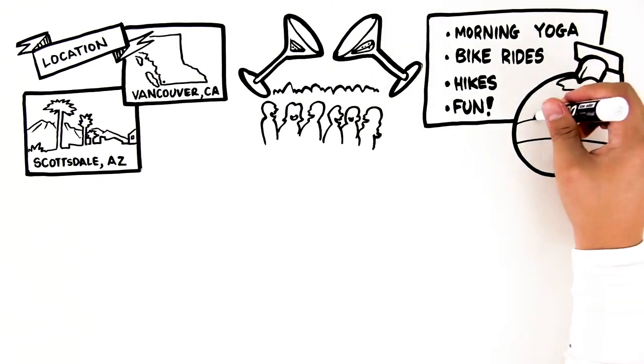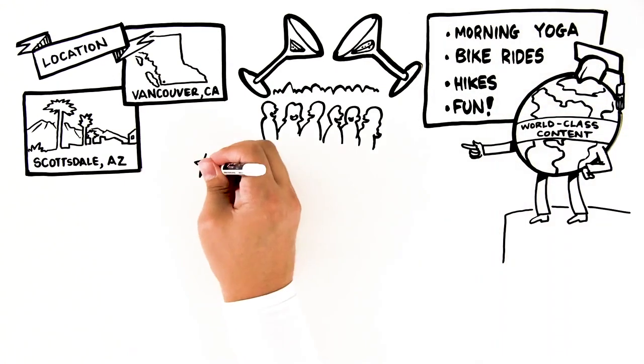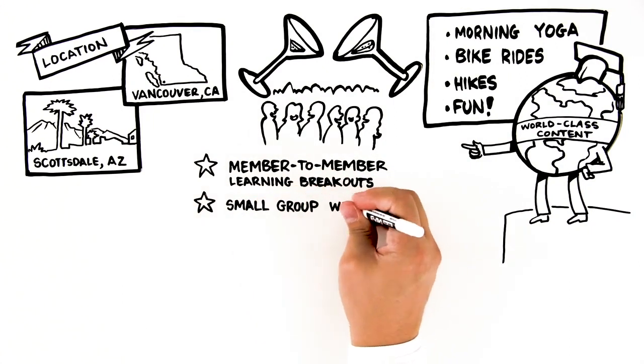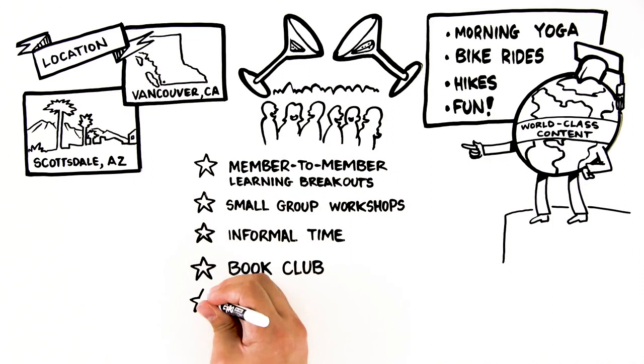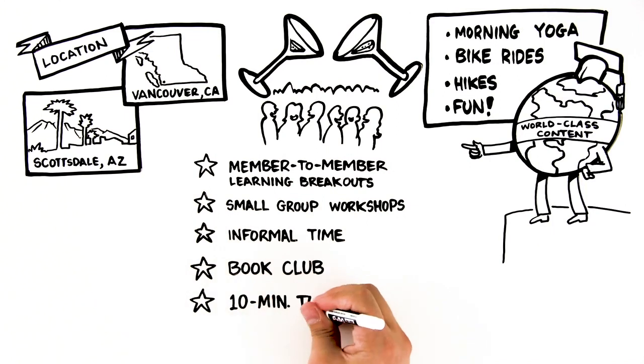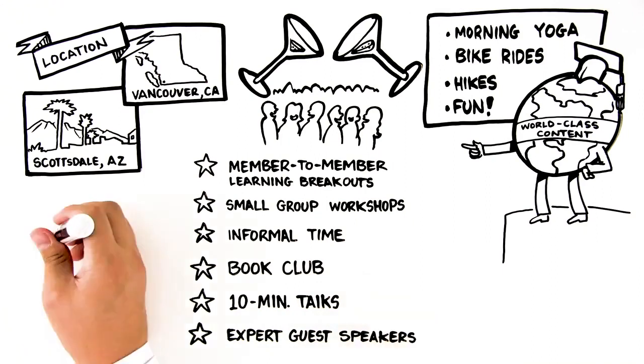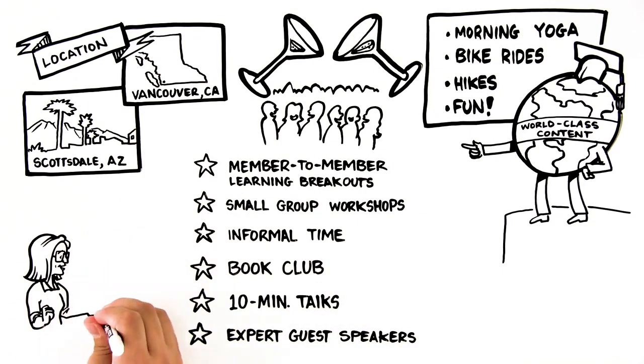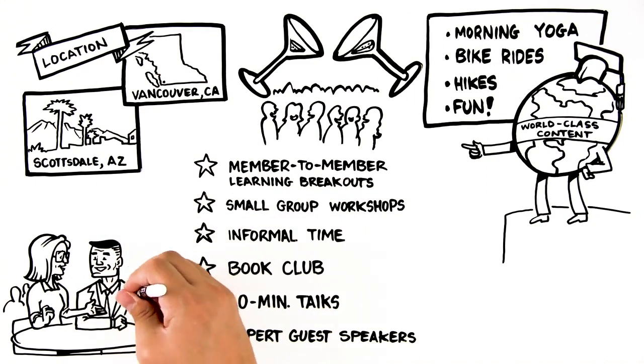The content from the COO Alliance events comes in a variety of forms: member-to-member learning breakouts, small group workshops, informal time, book club, 10-minute talks given by members on their own area of expertise, and expert guest speakers who come to share with us. We operate the meetings in a confidential environment that allows everyone to feel comfortable in truly sharing and opening up with each other.